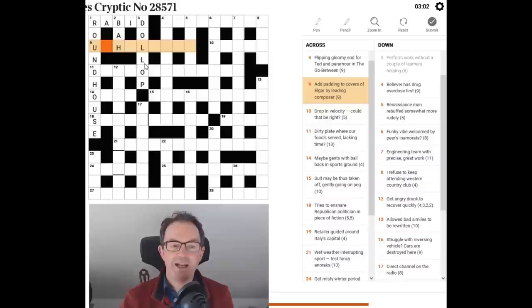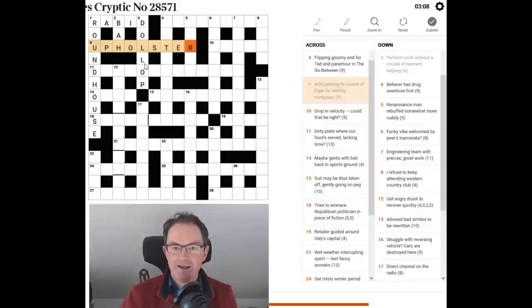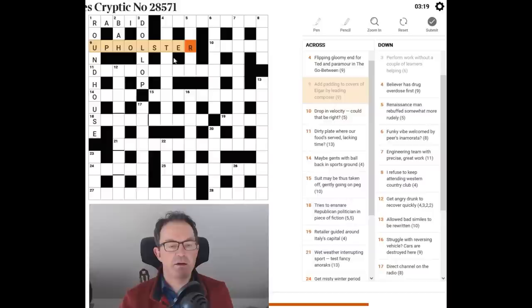So I'm thinking upholster for this without actually reading the clue. Okay. Add padding to covers of Elgar. Well add padding to it must be upholster. Add padding to covers of Elgar. Now the covering letters of the word Elgar are E and R. So it's probably that E and R. By leading composer.